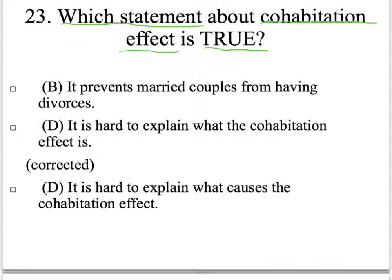D 這個答案反而找不到，因為出題老師的措辭上稍微有一點失誤。後來更正的答案是：It is hard to explain what causes the cohabitation effect。因為原本給的答案是 It is hard to explain what the cohabitation effect is，那跟想問的不一樣。